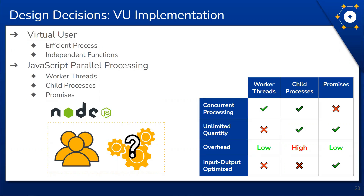The VUs should also be independent from each other — if one VU encounters an error or has poor performance, it shouldn't impact any of the other VUs, which requires some amount of parallel processing. We wanted to build the load generation tool using JavaScript, and there are several ways we could go about simulating users in Node.js including promises, child processes, and worker threads. We evaluated these options by looking at their ability to perform concurrent processing, if they were limited in quantity, the processing overhead of running them, and how optimized they were for I/O tasks such as making HTTP requests.